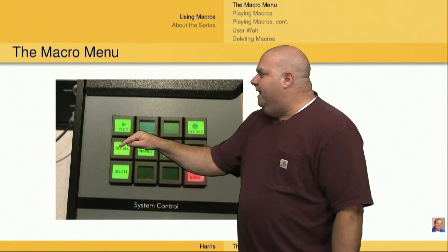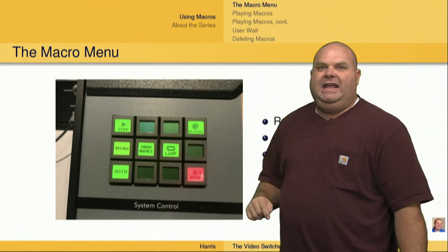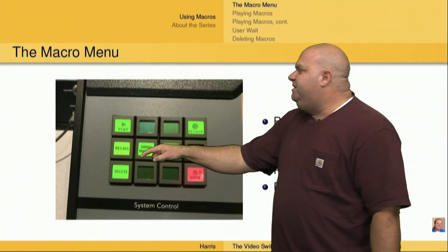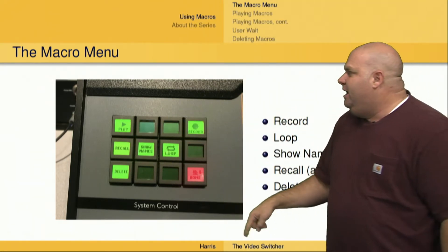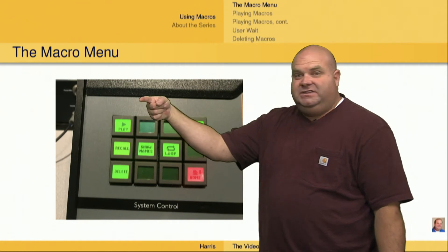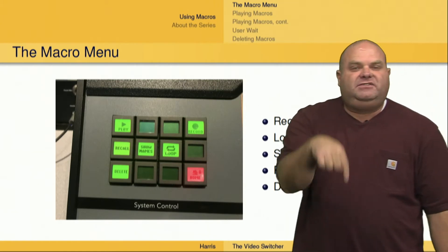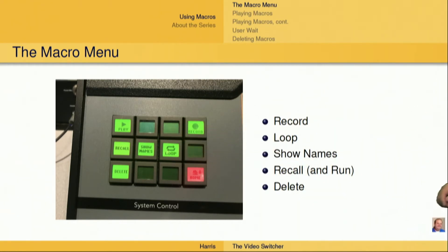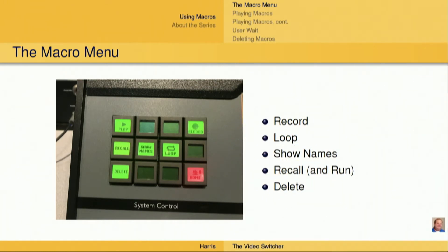We also have the recall button. If we push that recall button, it's going to say recall and run. If we have the recall button selected, then when we use the key bus to select a macro — which I'm going to show on the next graphic — it's only going to say it's ready to go, and it's going to wait for us to push that play button before it actually executes the macro. If we have recall and run selected, which we do by pushing the recall button so it changes to recall and run shown in red, we don't even have to push the play button. Once we've selected the macro on the key bus, it will immediately recall and start playing back that macro. The last thing on the menu is the delete button, which allows us to delete macros for reuse.